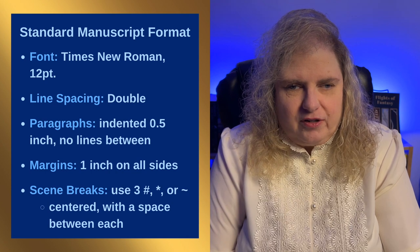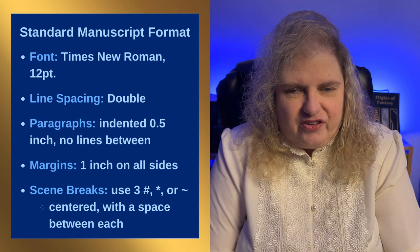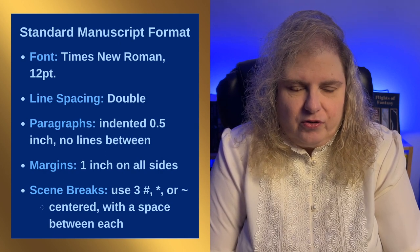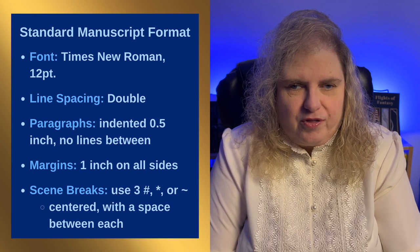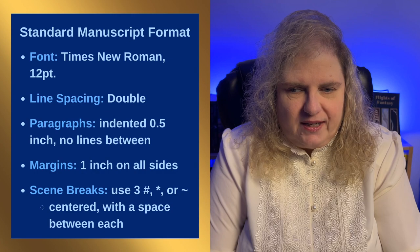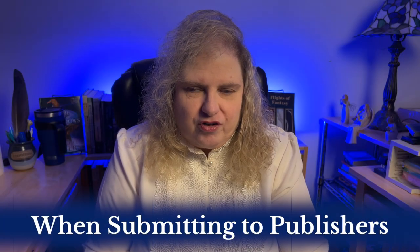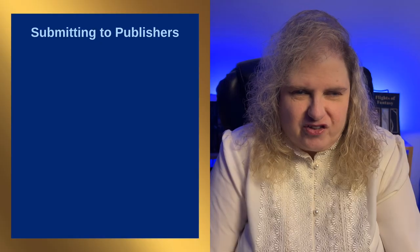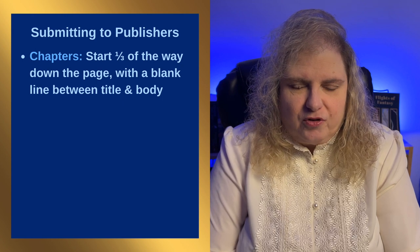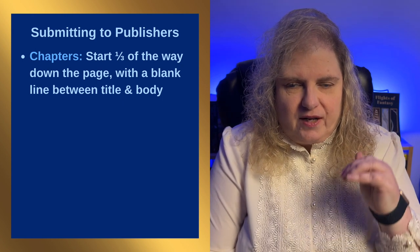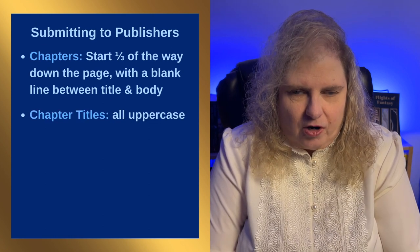If your chapters include multiple scenes, for scene breaks you'll want to use either the pound symbol, an asterisk, or a tilde — three of those with a space between, centered on a line by themselves. If you are submitting to traditional publishers, chapter titles should begin one third of the way down the page with some space between the title and the body of your story. Chapter numbers and titles should be in all caps.